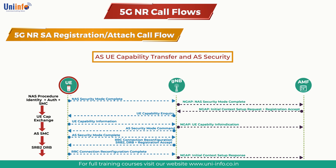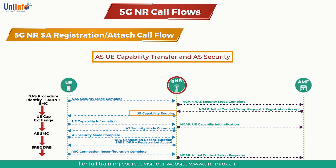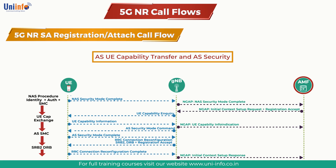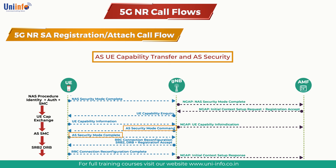Then comes AS UE Capability Transfer and AS Security. The gNodeB can acquire UE capability via UE Capability Inquiry and UE Capability Information. After receiving UE capability, the gNodeB updates these capabilities to the AMF. The gNodeB sends a Security Mode Command message to the UE to notify it to start the Integrity Protection and Encryption process. After that, downlink encryption is started. The UE derives the key according to the Integrity Protection and Encryption algorithm indicated by the Security Mode Command message, and then replies with the Security Mode Complete message to the gNodeB. After that, upstream encryption is started.